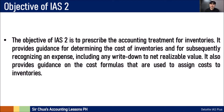The objective of IAS-2 is to prescribe the accounting treatment for inventory. IAS-1 is very general about presenting all of your financial statements. Now we have financial accounting standards that will discuss in detail each line item or transaction, and we start with IAS-2 Inventories. It provides guidance for determining the cost of inventories and subsequently recognizing an expense, including any write-down to net realizable value. It also provides guidance on the cost formulas used to assign cost to inventories, like specific identification, first-in first-out, and weighted average.